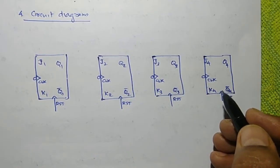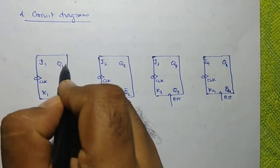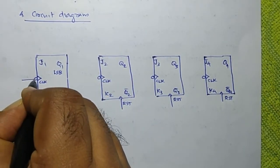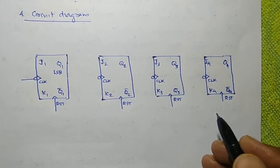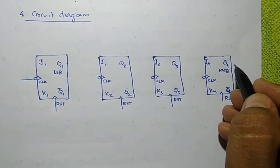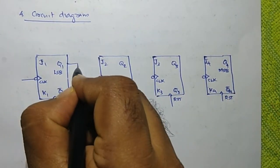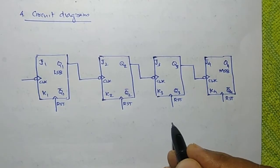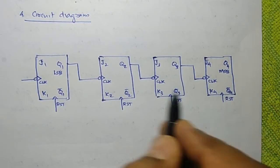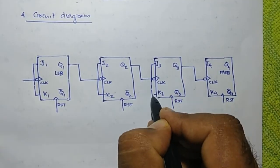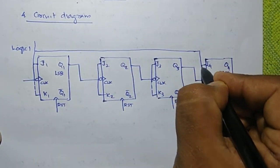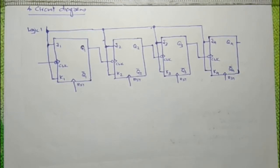In this mod 10 counter, the external clock is given at the first flip-flop only. The output Q1 is taken as the least significant bit. The fourth flip-flop's output Q4 is the most significant bit of the binary number. Clocks for other flip-flops are derived from the outputs of the previous flip-flops. The JK terminals of all the flip-flops are shorted together and connected to logic state 1. Now let's write the truth table.